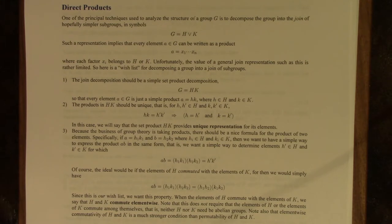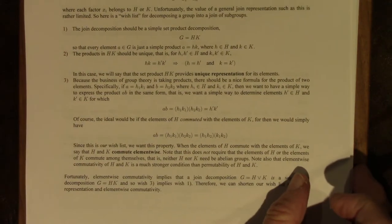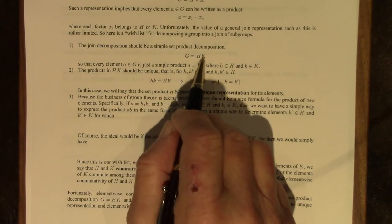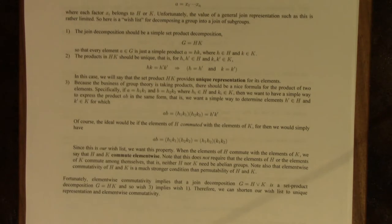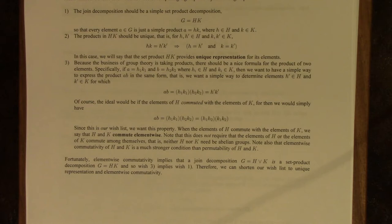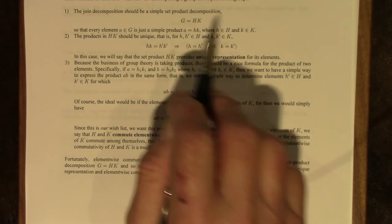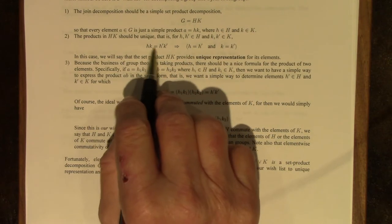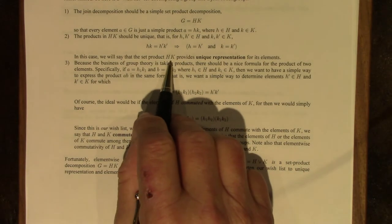So we should construct a wish list for doing this decomposition. The first item on the list is that the join decomposition should be a simple set product. So G should be the set product of H and K, so that every element, little a in G, is just a product of little h times little k. The second item on our wish list is that the products in H and K should be unique. So if hk equals h'k', then the h factors must be equal and the k factors must be equal. We'll refer to this very desirable property as unique representation for the elements in the set product.